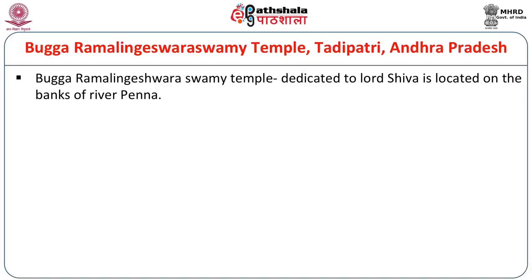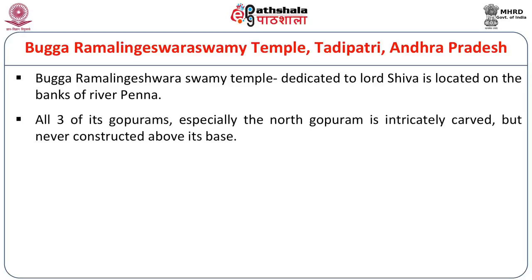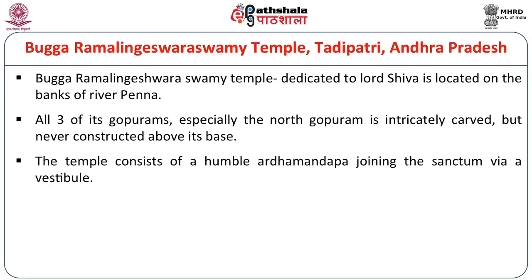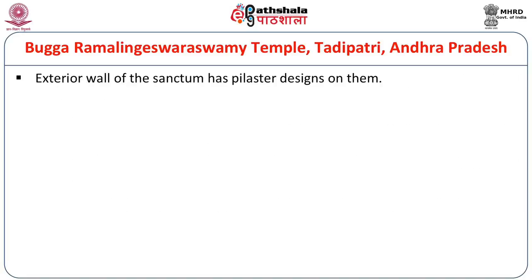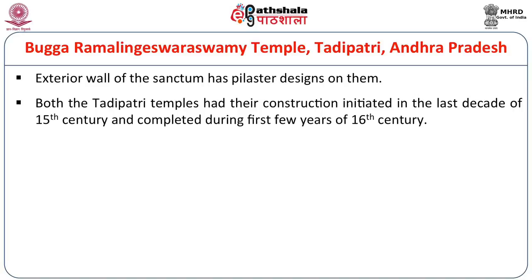The Bugha Ramalingeshwara Swami temple, again at Tadi Patri in Andhra Pradesh, is dedicated to Lord Shiva and is located on the banks of river Penna. All three of its gopurams, especially the north gopuram, are intricately carved but not constructed above their base. The temple consists of a humble Ardhamandap joining the sanctum via vestibule. The sanctum has a wagon-vaulted Shikara above the Vimana, flanked by a richly carved Kirtimukha — another architectural adornment of the Vijayanagara school. Both these Tadi Patri temples had construction initiated in the last decade of the 15th century and were completed in the first few years of the 16th century.